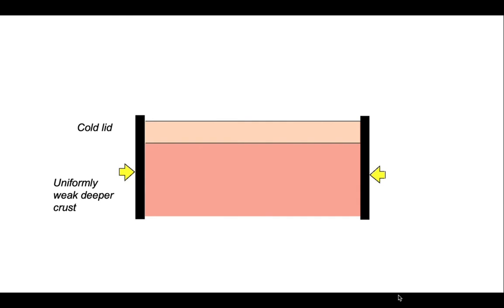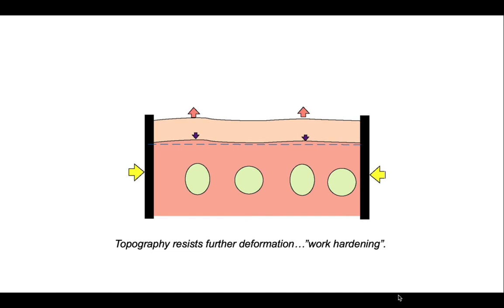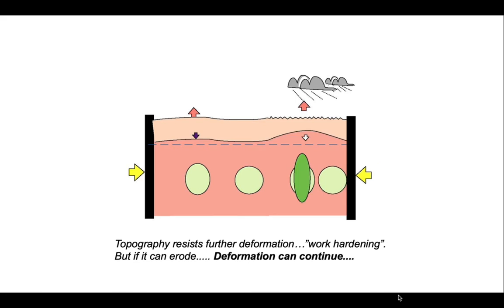Let's look at this in this cartoon here. We're going to deform a profile of crust, and the topography that's created is resisting further deformation — it's an example of work hardening. But what if we add erosion? If rainfall can erode the surface and we flush away the eroded products, the detritus, we release the topographic load so that deformation can continue. And we can create heterogeneous strain variations in the crustal deformation if the erosion is also heterogeneous.